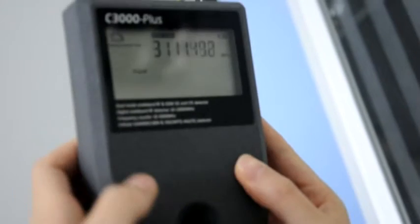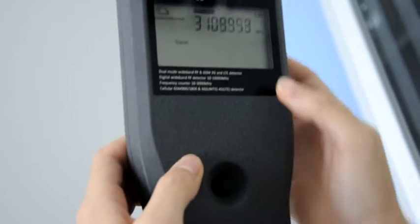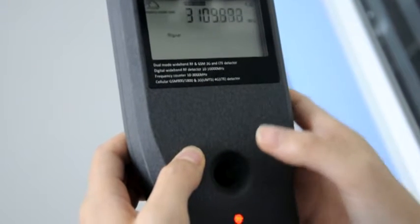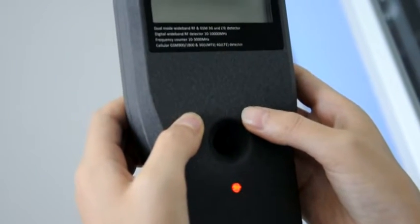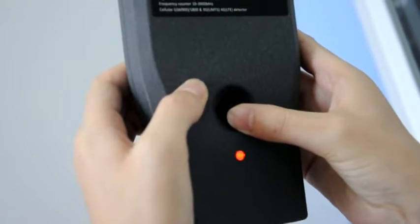And this device has three working modes. The original one is the Frequency Counter Ring. And under this mode, there are two frequency ranges. The first one is 3000 MHz, and the second one is 500 MHz.